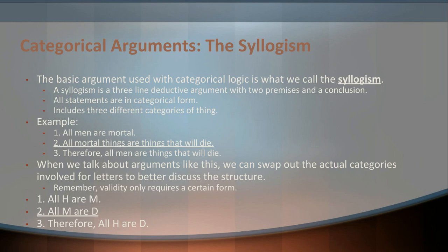A syllogism is a three-line deductive argument that has two premises and a conclusion. This argument also has to have all statements in categorical form, and it has to involve at least three different categories of things. So, for example: 'All men are mortal. All mortal things are things that will die. Therefore, all men are things that will die.' That is an example of a categorical syllogism. Sometimes the term 'syllogism' is used more loosely — like the classic 'All men are mortal. Socrates is a man. Therefore, Socrates is mortal.' That's technically a syllogism but not a categorical one, and we're specifically dealing with categorical logic right now.